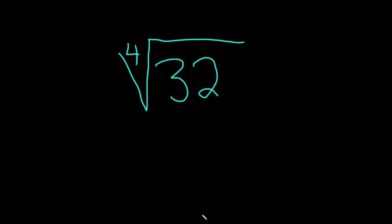Hi, in this problem we are going to simplify the fourth root of 32. So to do this we'll start by factoring the 32 as much as we can, and then we're going to group the factors and try to write as many of them as we can to the fourth power.